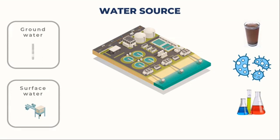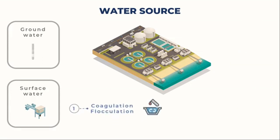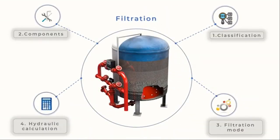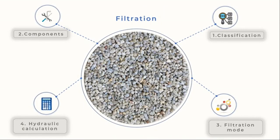Coagulation, flocculation, sedimentation, filtration, and disinfection are the most often used treatment processes for surface water supplies. I will describe the filtration stage in this video. Many waterborne particles are too tiny to be removed by simple sedimentation. Filtration either eliminates precipitated particles and flocs that remain after sedimentation, or removes germs and suspended debris from water that has not undergone sedimentation treatment.